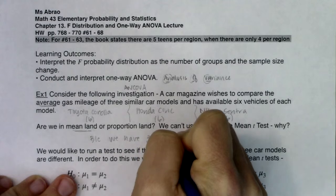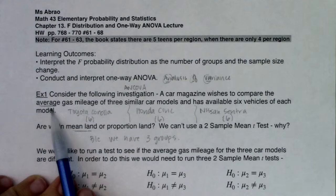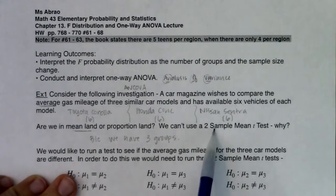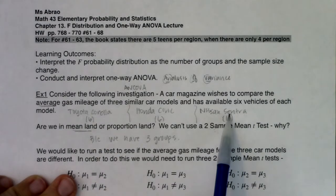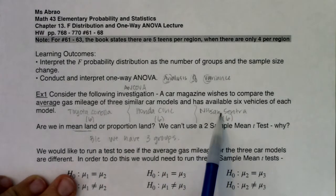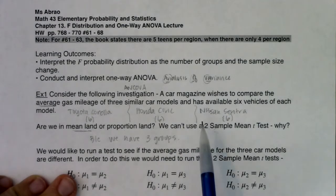So stats folks realize something was up with this. We're like, oh no, what are we going to do? What happens when we want to compare averages and then we have more than two groups, two treatments, two samples, that kind of thing. So if I was going to run two-sample mean t-tests it would become pretty cumbersome because I'd have to first compare the Corollas to the Civics, then I'd have to compare the Corollas to the Sentras, and then I'd have to compare the Civics to the Sentras.